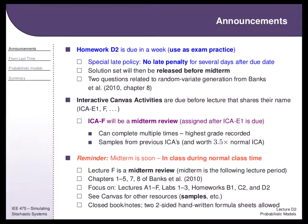There's also a Canvas activity F that waits for lecture E1 — that's Tuesday's lecture. E1 will disappear on Tuesday and then F will be released. It basically randomly samples from all of the ICAs before it, and you can complete that ICA as many times as you want — they'll just take the highest score. It's meant to be a midterm review, due for lecture F, which is basically a week after E1. Lecture F will be a midterm review, and then you'll have a weekend. The midterm will be on the Tuesday following that, which I think is October 8th.